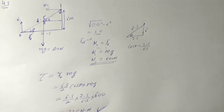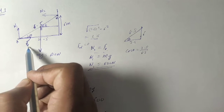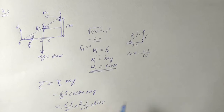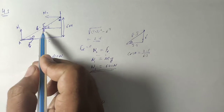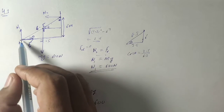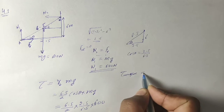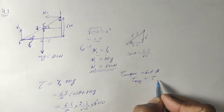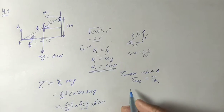For the second part — find the force exerted by the ground on the ladder. The ground exerts a normal force N1 and a friction force. N1 is clearly 600 Newtons. To find friction, we take torque about point A. The net torque about A is zero because the whole system is at rest.